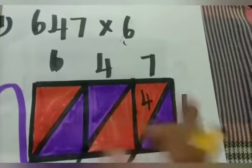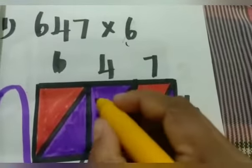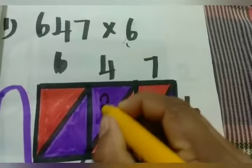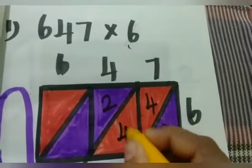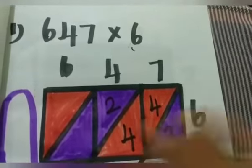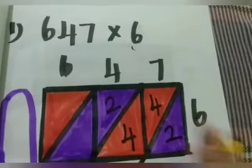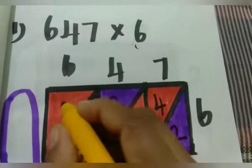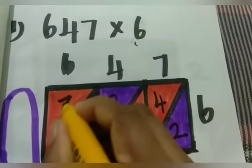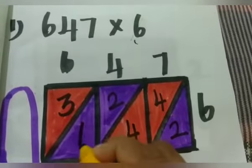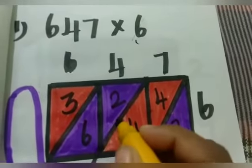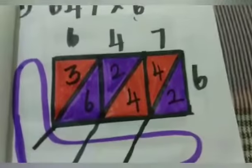Next, 4 times 6 are 24. So, 2 is in the 10-strip and 4 is in the 1-strip. Next, 6 times 6 are 36. So, 3 in the 10-strip and 6 in the 1-strip.